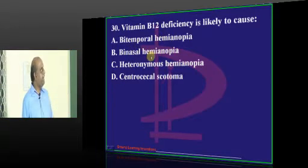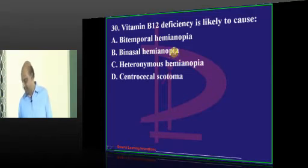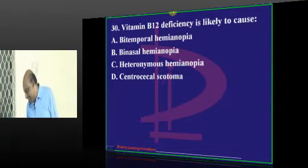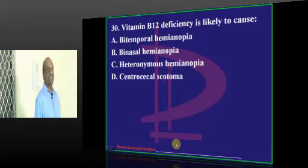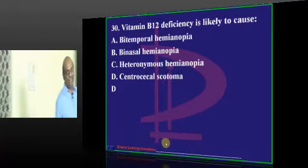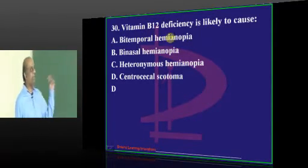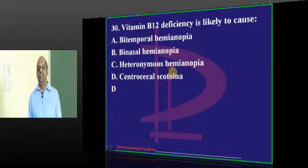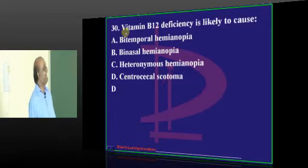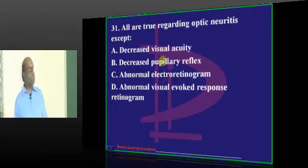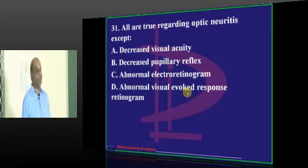In vitamin B12 deficiency, the visual field defect is binasal, bitemporal, homonymous, or centrocecal? Guntur correctly answers centrocecal, as do Visag and Thirupati. This is a favorite examiner stock question — we must not forget centrocecal scotoma in vitamin B12 deficiency, or we will be eliminated in the competition.